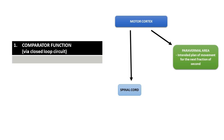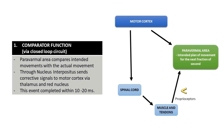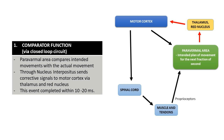Comparator action: when the motor cortex sends impulses to the corticospinal tract, it also sends a message to the paravermal area of the cerebellum about the sequential intended plan of movement for the next fraction of a second. The cerebellum also gets feedback from proprioceptors of muscles, tendons, and joints about what actual movement is occurring. The paravermal area of the cerebellum compares the intended movement with the actual movement and sends corrective signals to the motor cortex through the thalamus and red nucleus. This event is completed within 10 to 20 milliseconds and is accomplished by the closed loop circuit.